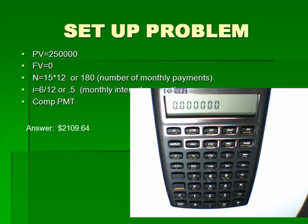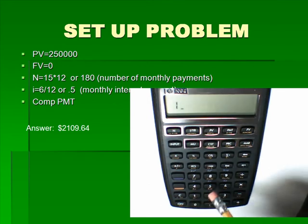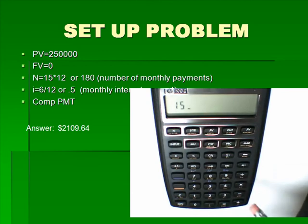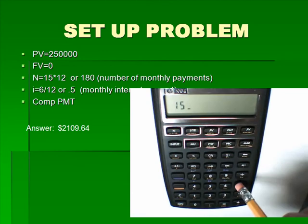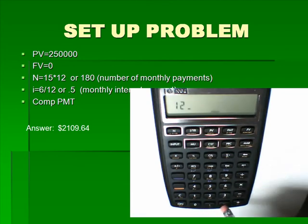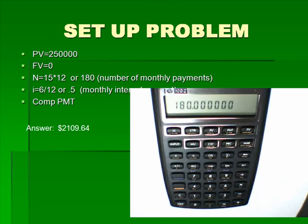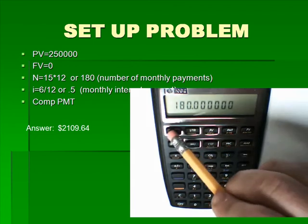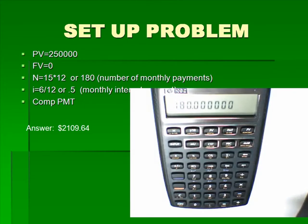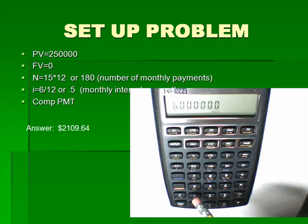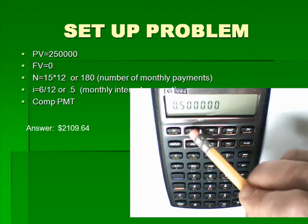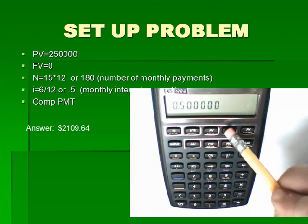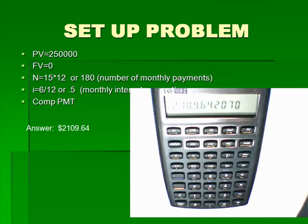You're paying it for 15 years. To enter your period of time, it is 15 years, but we're making a monthly payment, so times 12 — this is how many payments you're going to have. That is your N or end period. Your rate is 6% annually, so 6 divided by 12 is a 0.5 monthly interest amount. Hit your payment key, and that is your payment amount on this mortgage.